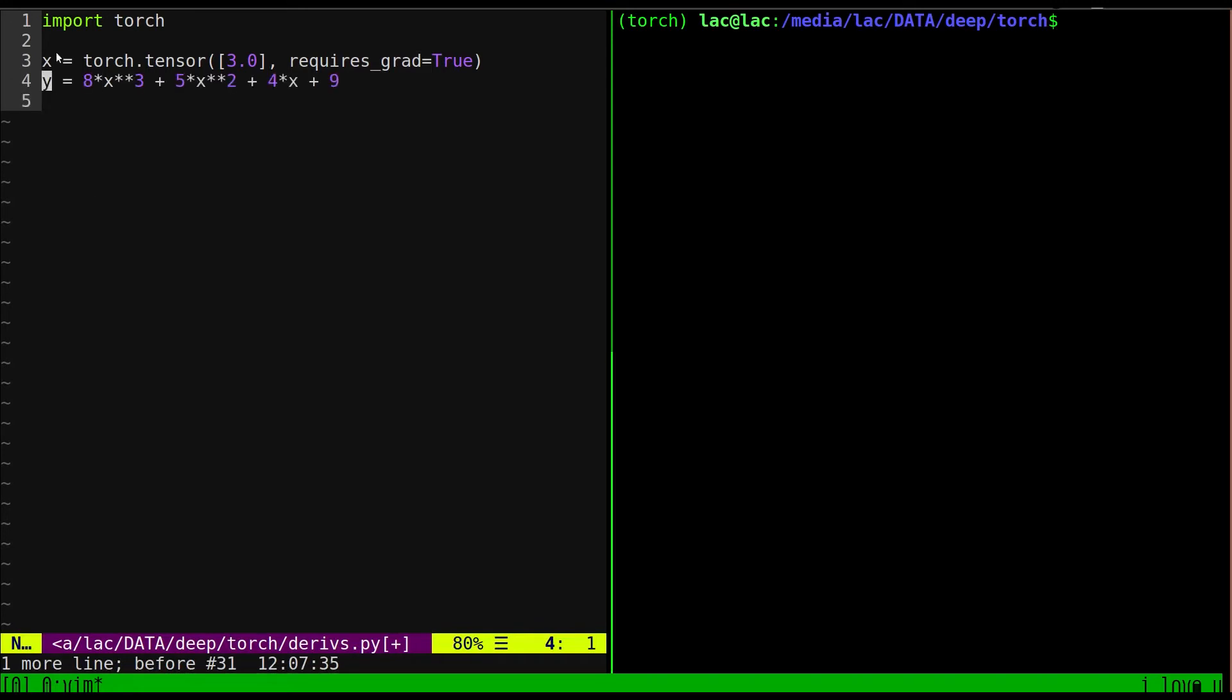Then you're going to define the function that you want to compute the derivative of. We did this by hand, this is that same function, it's just in like Python-y form. So you see your exponents are like this, two asterisks, and that's basically it.